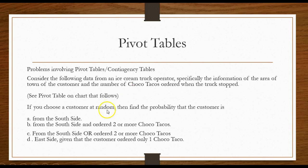If you choose a customer at random, find the probability that the customer is from the south side. From the south side and ordered two or more Choco Tacos. From the south side or ordered two or more Choco Tacos. From the east side given that the customer ordered only one.